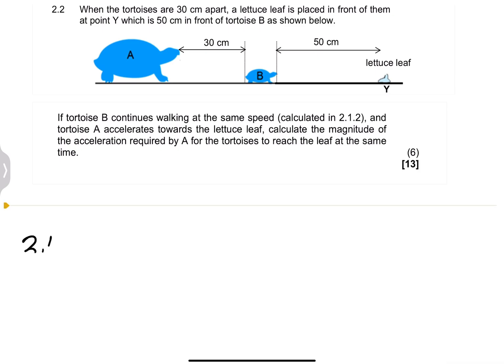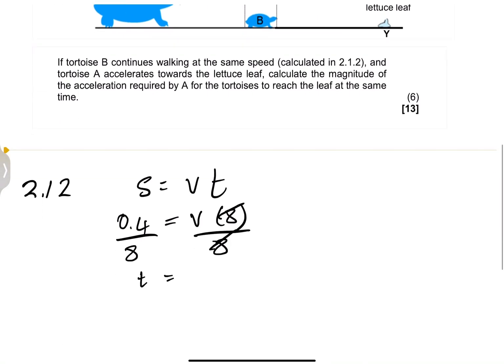So in 2.1.2 we said S equals V times T. In this case we know this is going to be 0.4, we want the speed which is V, and the time was 8 seconds. We can divide both sides by 8 and that gives us 0.05 meters per second.